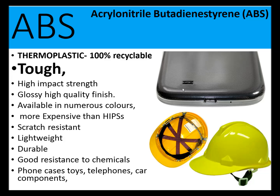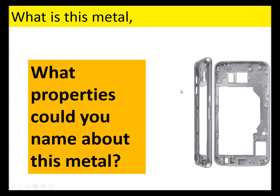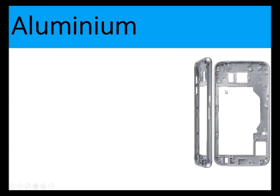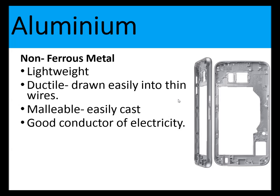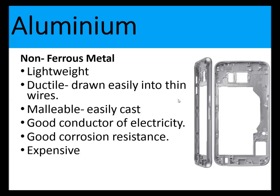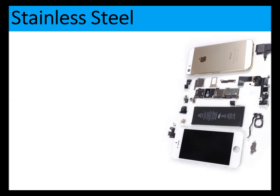Higher-end phone cases are made from aluminium or an aluminium alloy. Aluminium is a non-ferrous metal; it's lightweight, ductile so it can be easily shaped, stamped, and drawn into thin wires, and malleable so it's easily cast. It is a good conductor of electricity and has good corrosion resistance, but it is more expensive than plastic-type phone cases and is difficult to weld.